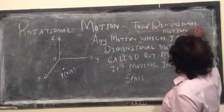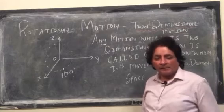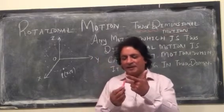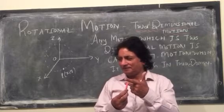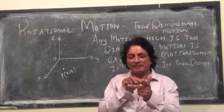I will call it a two-dimensional motion. Two-dimensional motion. Basically, you can divide space into three: X-Y plane, Y-Z plane, and Z-X plane.